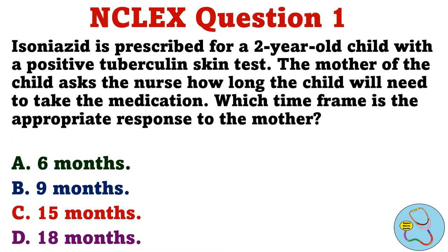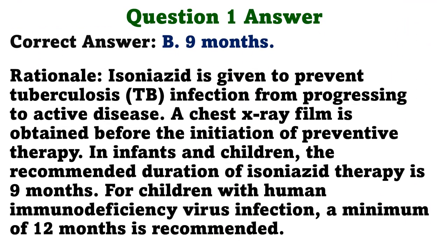Question 1. Isoniazid is prescribed for a 2-year-old child with a positive tuberculin skin test. The mother of the child asks the nurse how long the child will need to take the medication. Which time frame is the appropriate response to the mother? A. Six months. B. Nine months. C. Fifteen months. D. Eighteen months. The correct answer is B. Nine months.